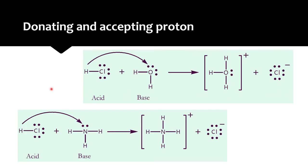When we talk about a transfer reaction, we have to look at two species at the same time — one gives, one takes. For example, HCl transfers its proton to water (H2O). The products are hydronium ion and chloride ion. By the Bronsted-Lowry definition, HCl donates the proton — so it is an acid. Water accepts the proton — so it is referred to as a base in this reaction.